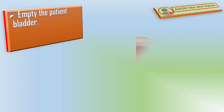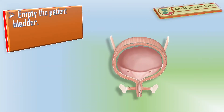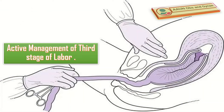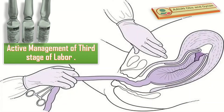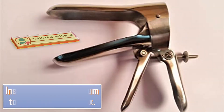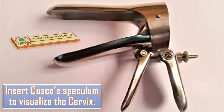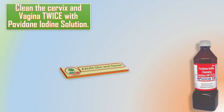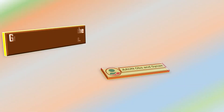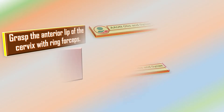I will empty the patient's bladder with the patient in dorsal position and complete the active management of the third stage of labor. Under aseptic measures, I will do bimanual examination to assess the size, position and mobility of the uterus. I will insert the Cusco speculum to visualize the cervix and clean the cervix and vagina twice with povidone iodine solution.